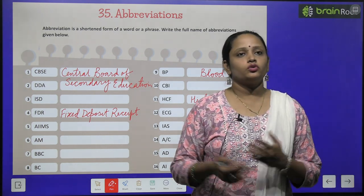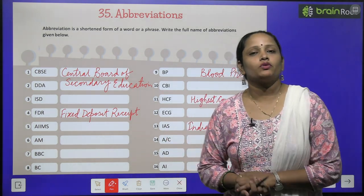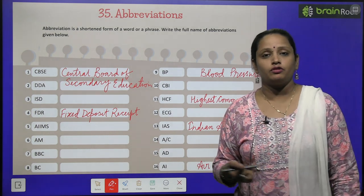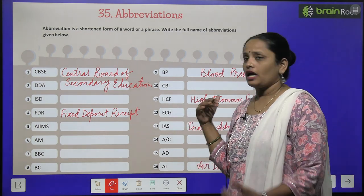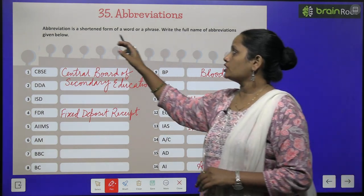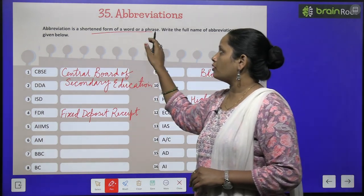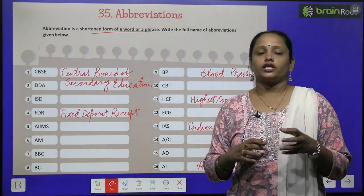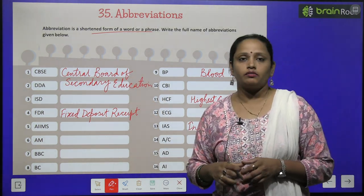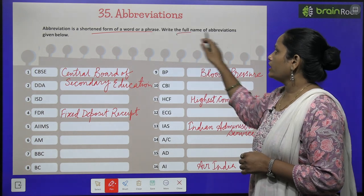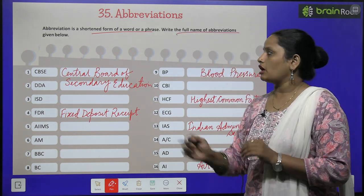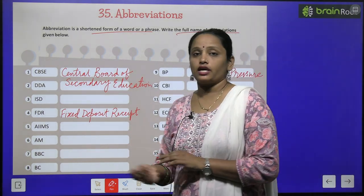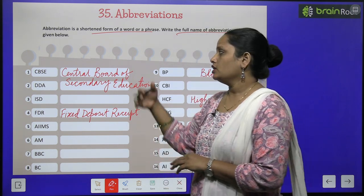Now children, let's move on to the next chapter which is chapter number 35, and this is abbreviations. Abbreviations is the shortened form of a word or a phrase. Kisi bhi word ko short karke likhne ko abbreviation kehte hain. Write the full name of the abbreviations given below. Yaha pe kuch abbreviations diye gaye hain, aap ko un ke full name likhne hain.